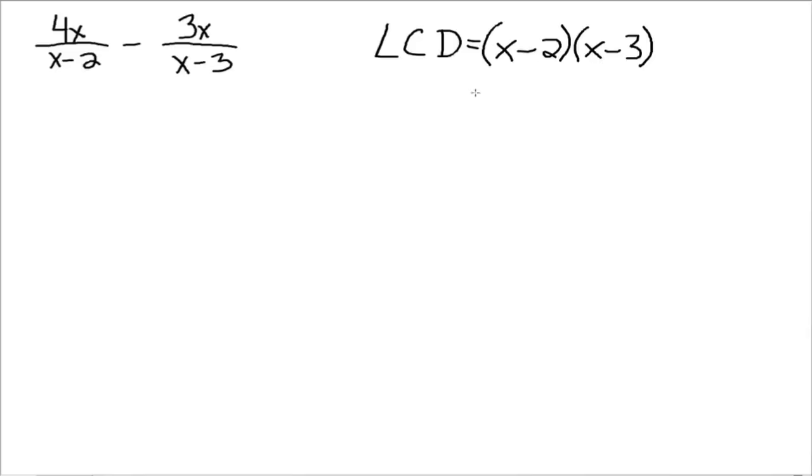So now let's figure out, this is our LCD. So go over here to each of our individual fractions and we say, here is the first fraction. The denominator is x minus 2. We would like that denominator to be x minus 2 times x minus 3. So what do we need to multiply this denominator by to make it look like the LCD? Well, we need to multiply it by x minus 3.